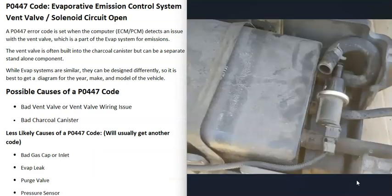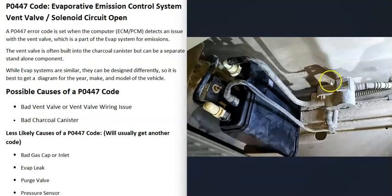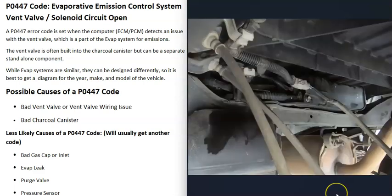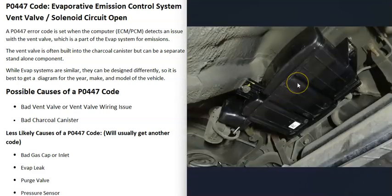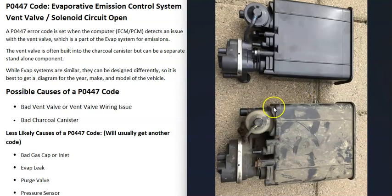The first thing to do is locate the vent valve. It's very common for these to be built into the charcoal canister, although sometimes they could be a separate component. If they are separate, they will be located right next to it. The charcoal canister is going to be up underneath the vehicle by the gas tank somewhere — the exact location will vary a little bit.